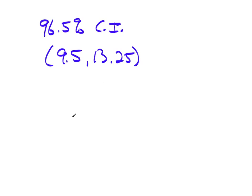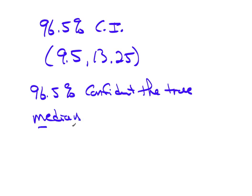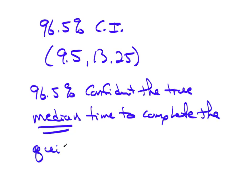So TC Stats reported a 96.5% confidence interval as being 9.5 to 13.25. Now, you need to interpret this in English. You would say you're 96.5% confident the true median—now this is about the median, it's no longer about the mean—time to complete the quiz is between 9.5 to 13.25 minutes.